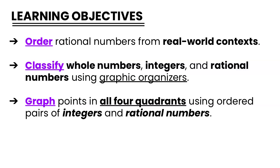And then finally, graphing points in all four quadrants using ordered pairs of both integers and rational numbers. This is new to 6th grade. Students have explored this in quadrant 1, but we will now be opening ourselves up to all four of the quadrants on the coordinate grid.